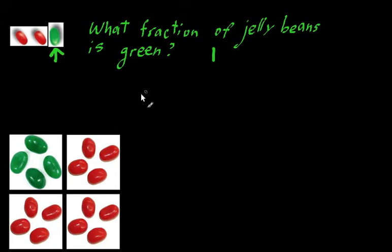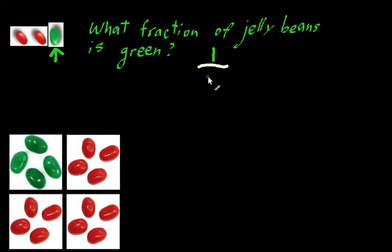And how many total jelly beans are there? Well, in total there are one, two, three jelly beans — two red jelly beans and one green jelly bean, so we have three total jelly beans. That means the fraction of jelly beans that's green is one out of three. Hopefully that made sense.